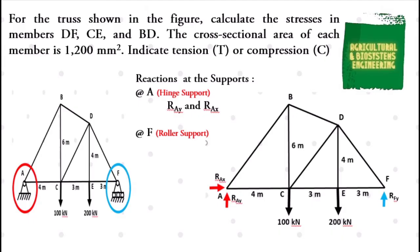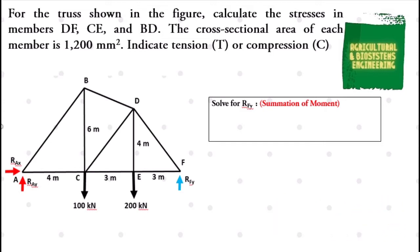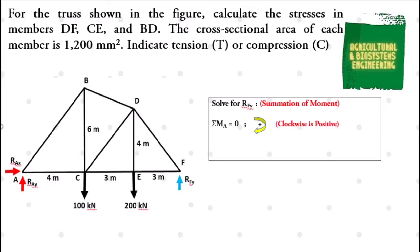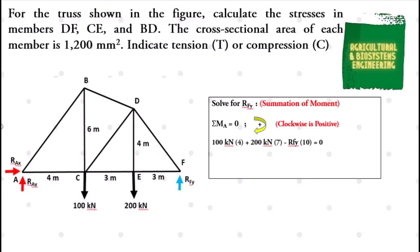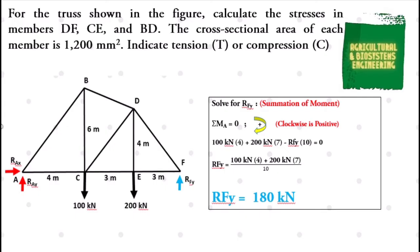The next step is to solve for the values of each reaction. For RAX, its value is zero since there is no other reaction acting on the X-axis. To solve for RFY, we will use the summation of moment at A equal to zero, where forces going clockwise are positive. We have: 100 kilonewton times 4, plus 200 kilonewton times 7, minus RFY times 10 equals zero. Solving, RFY equals (100×4 + 200×7) / 10 = 180 kilonewton.